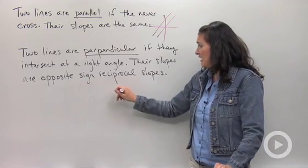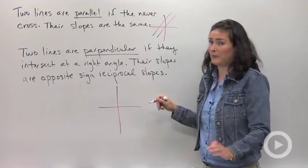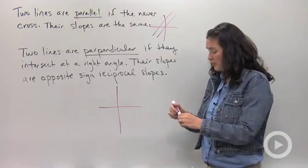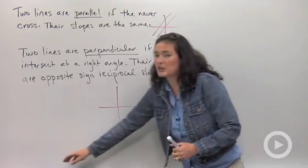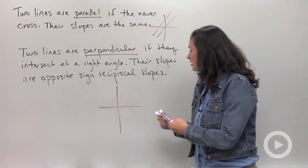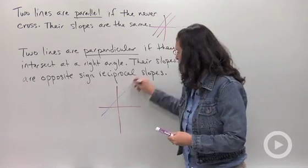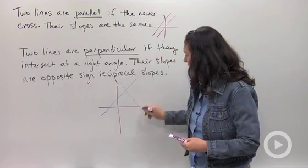Let's look at a picture of two perpendicular lines. Perpendicular lines mean they cross at a right angle. So if I draw this line right here, a perpendicular line would look kind of like that.